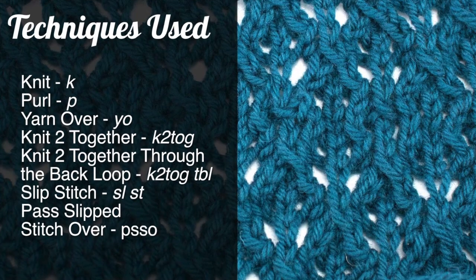For this stitch you will need to know the following techniques: knit, purl, yarn over, knit 2 together, knit 2 together through the back loop, slip stitch, and pass slip stitch over.